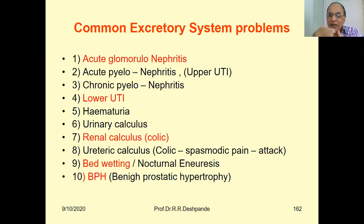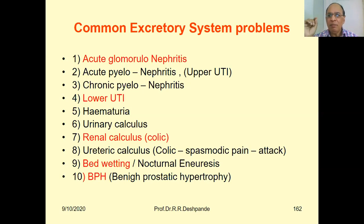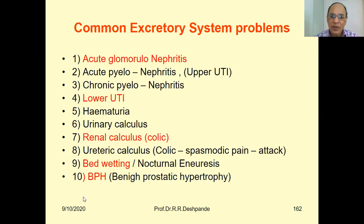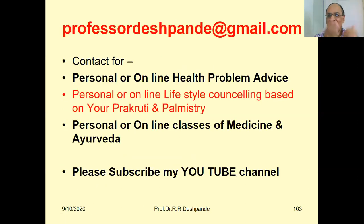Colic is defined as severe, intermittent, spasmodic abdominal pain. In another upcoming video we will discuss bed-wetting or nocturnal enuresis — children above six years who cannot control the bladder at night. The old-age problem is BPH, benign prostatic hypertrophy.